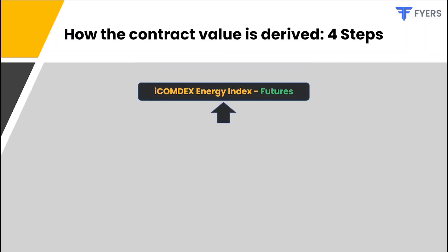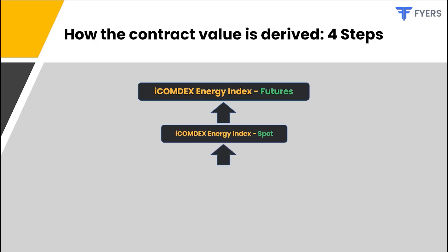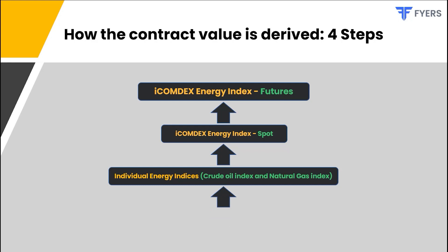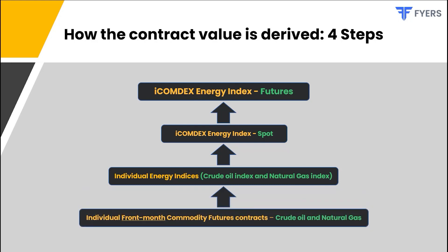The futures contract of the energy index is derived from the value of the spot energy index. In other words, the underlying of the ICOMDEX Energy Index futures contract is the ICOMDEX Energy Index spot contract. The ICOMDEX Energy Index futures is the ICOMDEX Energy Index spot plus the cost of carry. The ICOMDEX Energy Index spot is a weighted average index calculated based on the individual crude oil index and natural gas index contracts, each derived from their respective near-month commodity futures contracts.